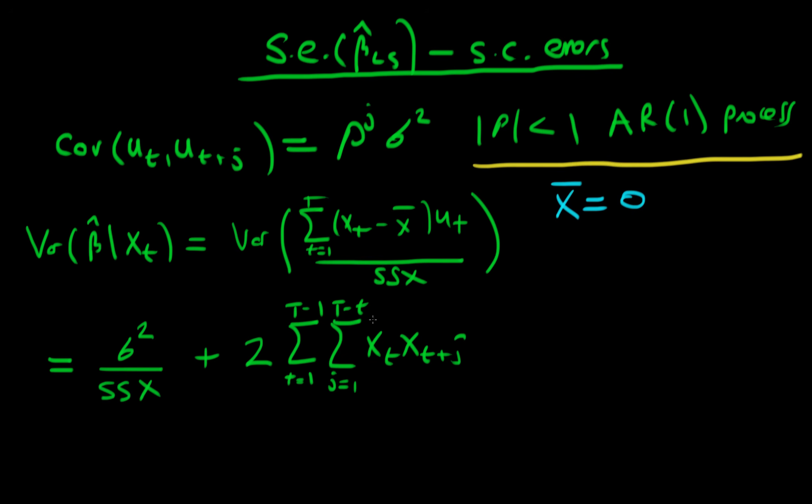And also in this term we're going to have the expectation of ut with ut plus j, and this term on the right actually is the covariance between ut and ut plus j because we have that u bar equals 0. Okay, and also we're going to need to divide this whole term on the right hand side by our SSx all squared, so we've got this whole term being divided by SSx squared.